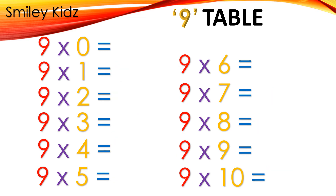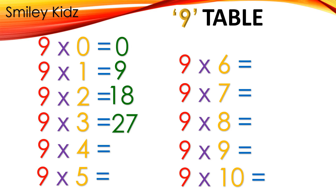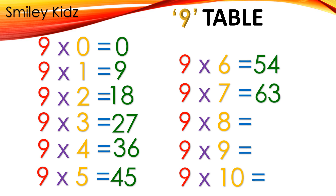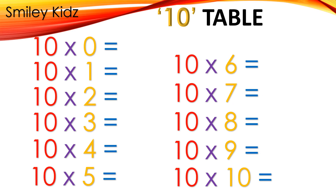Table 9: 9×0=0, 9×1=9, 9×2=18, 9×3=27, 9×4=36, 9×5=45, 9×6=54, 9×7=63, 9×8=72, 9×9=81, 9×10=90.